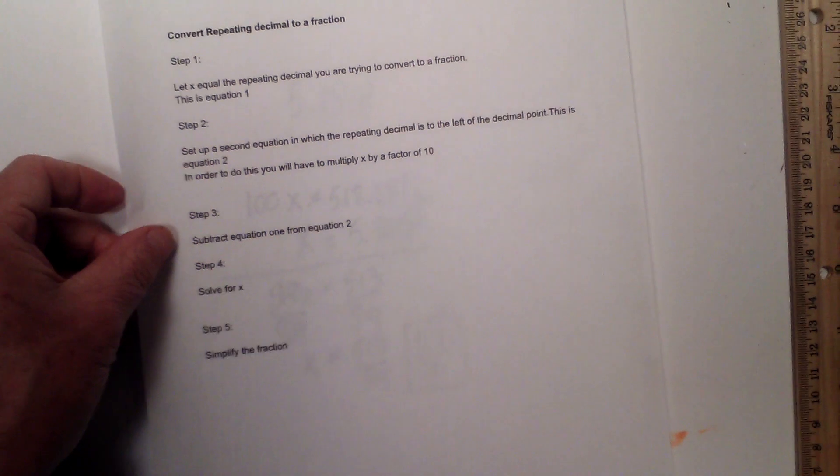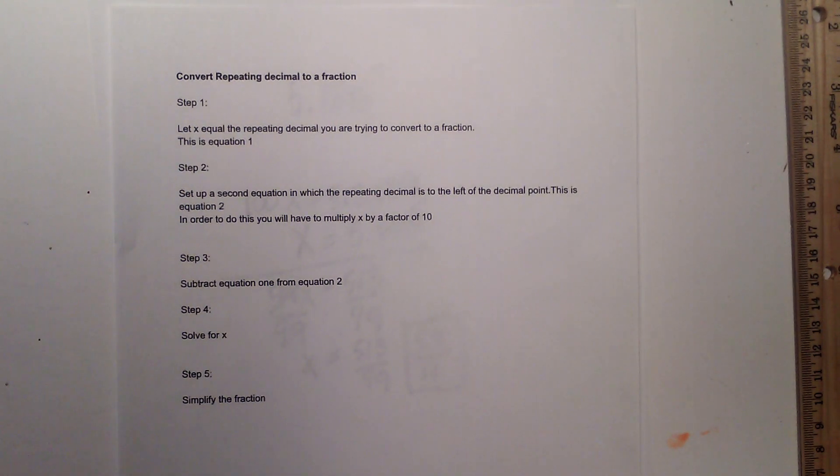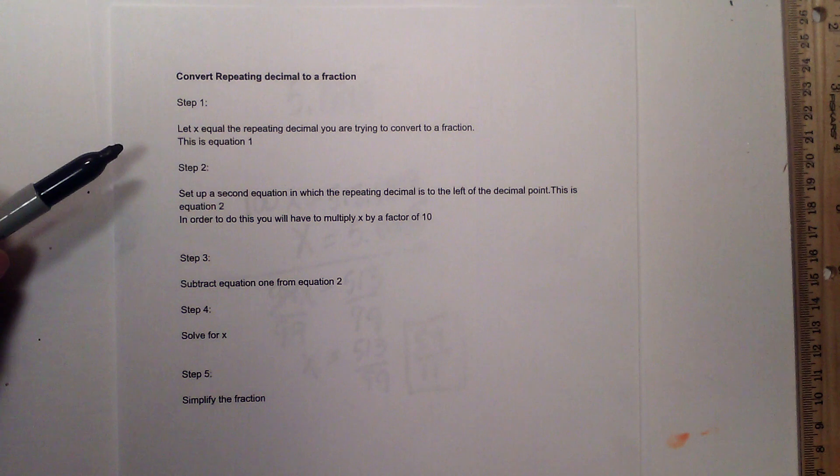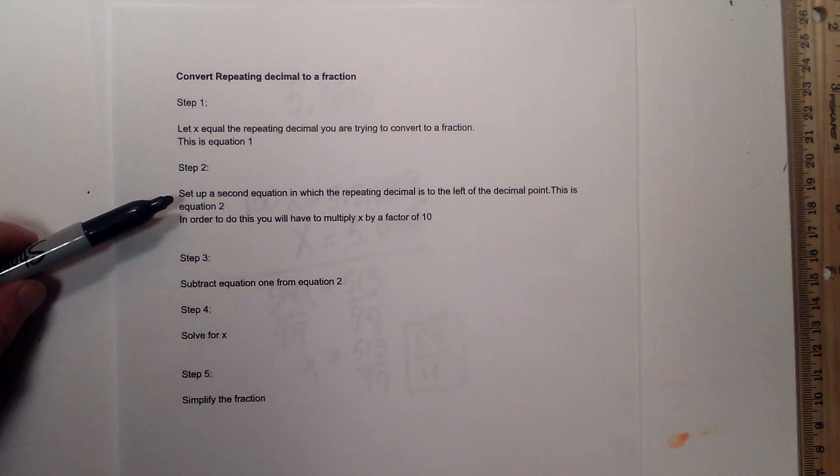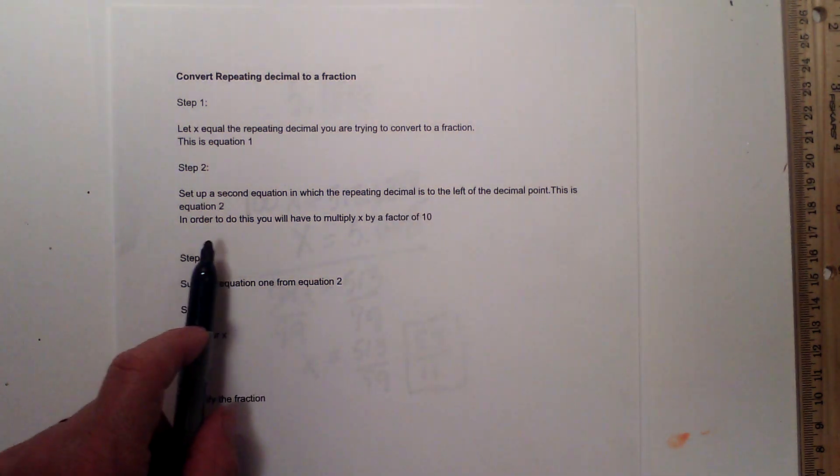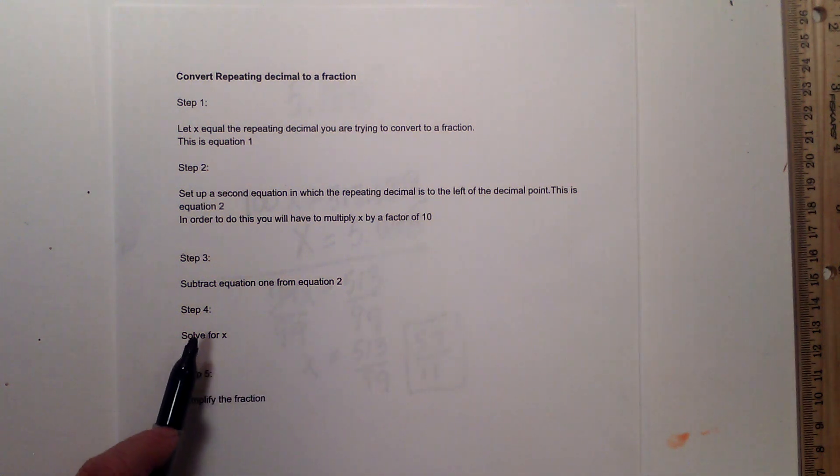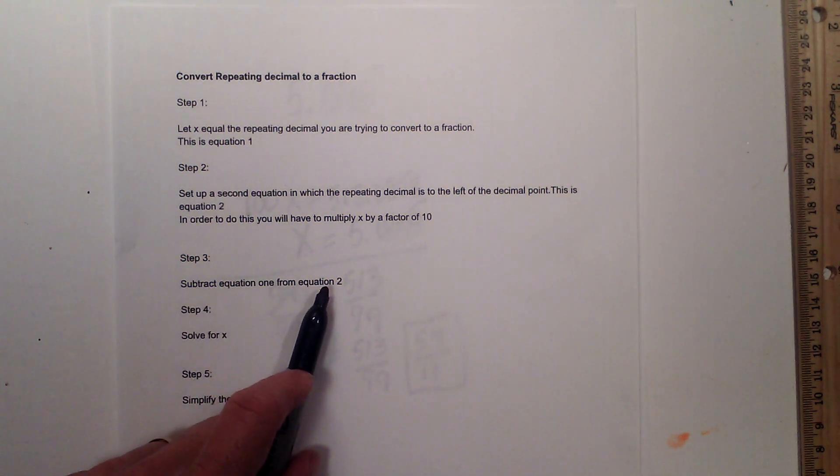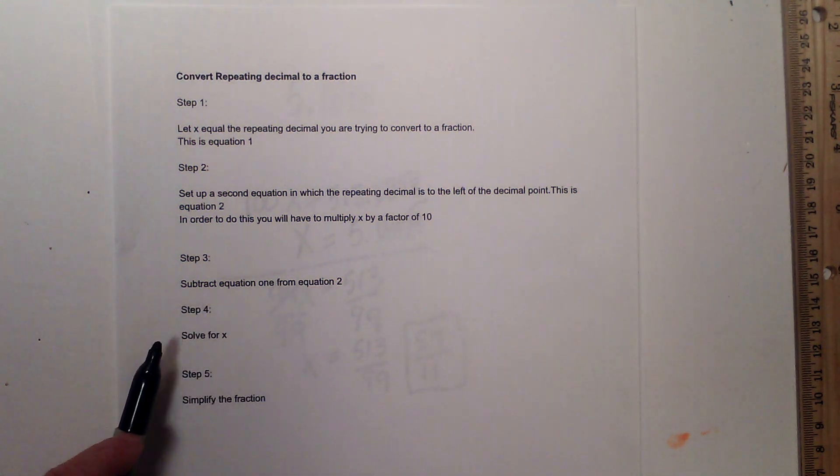So let's summarize one more time what we did. Step one, just set x to what the repeating decimal is. Step two, set up a second equation in which the repeating decimal is to the left of the decimal point. In order to do this you may have to multiply by a factor of 10. Subtract equation 1 from 2. Solve for x. Simplify the fraction. It will work for all repeating decimals to a fraction. Thanks for watching and MooMooMath uploads a new math and science video every day. Please subscribe and share.